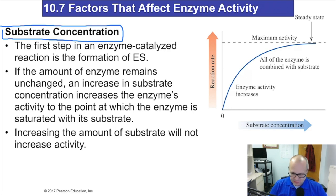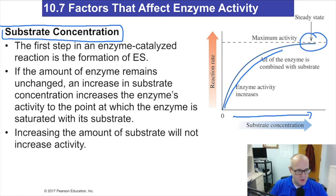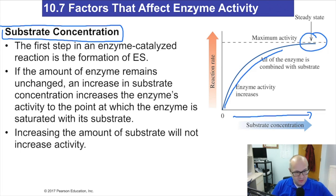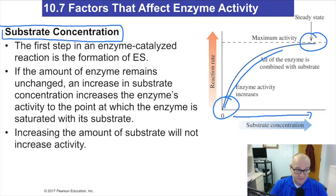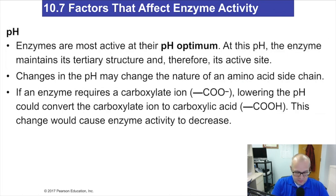As the substrate concentration goes up, reaction activity goes up as well. Now there's a limit — the enzyme can't work any faster. If the concentration is really low, the enzyme won't even be able to find the substrate. If the concentration is really high, the enzyme is maxed out. There's a sweet spot called the steady state where the enzyme is working really well. If you're too low, enzyme activity falls to zero — if there's nothing to react with, your reaction rate is zero.